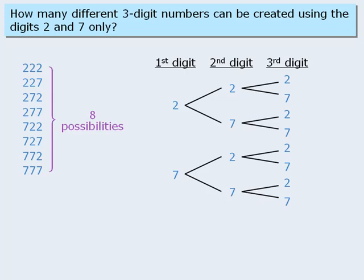How is this tree related to the solution to the question? Notice that each path in this tree represents one of the possible outcomes. For example, this path represents the number 222, and this path represents the number 727. So now our question becomes how many different paths exist in this tree?